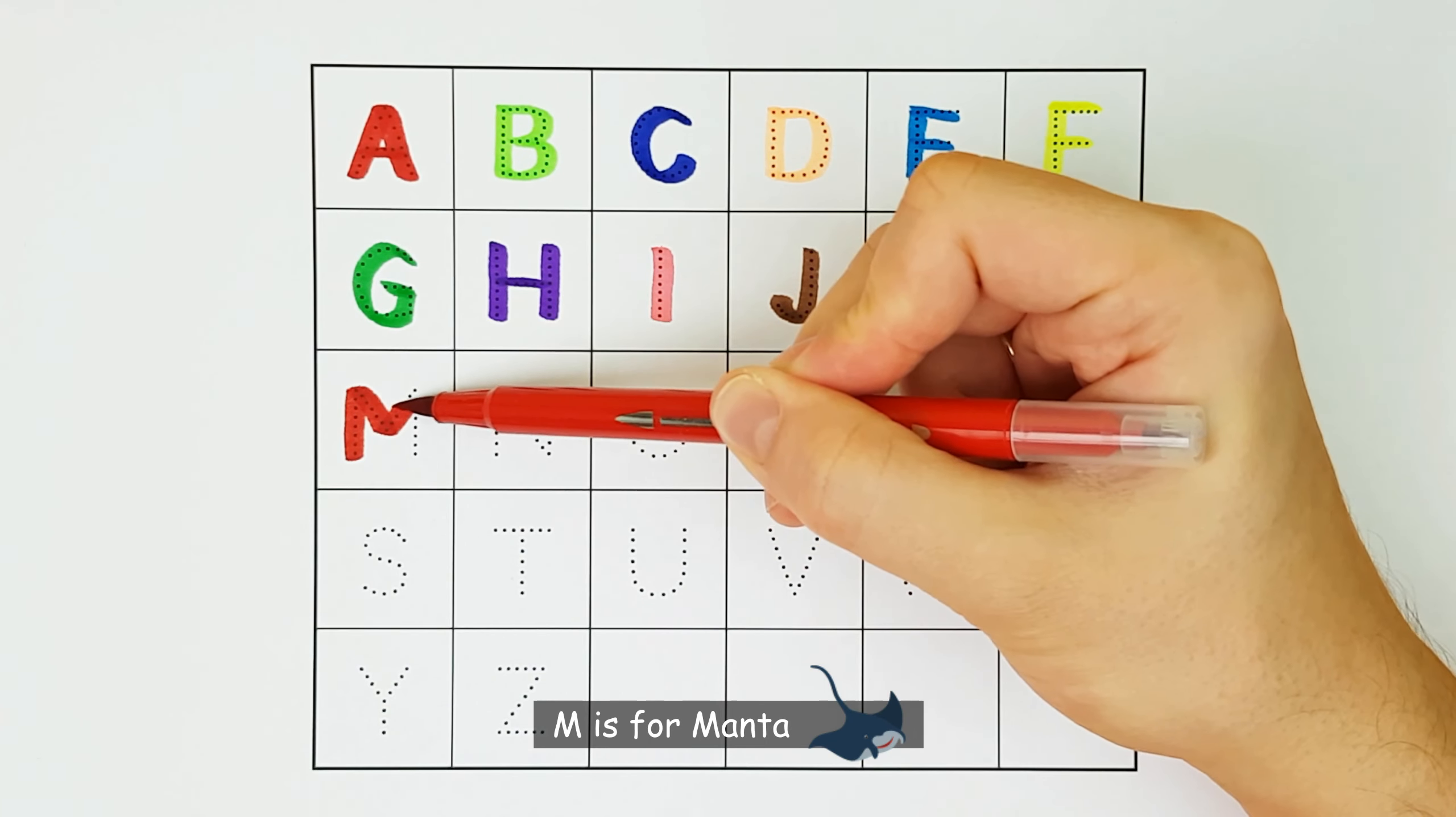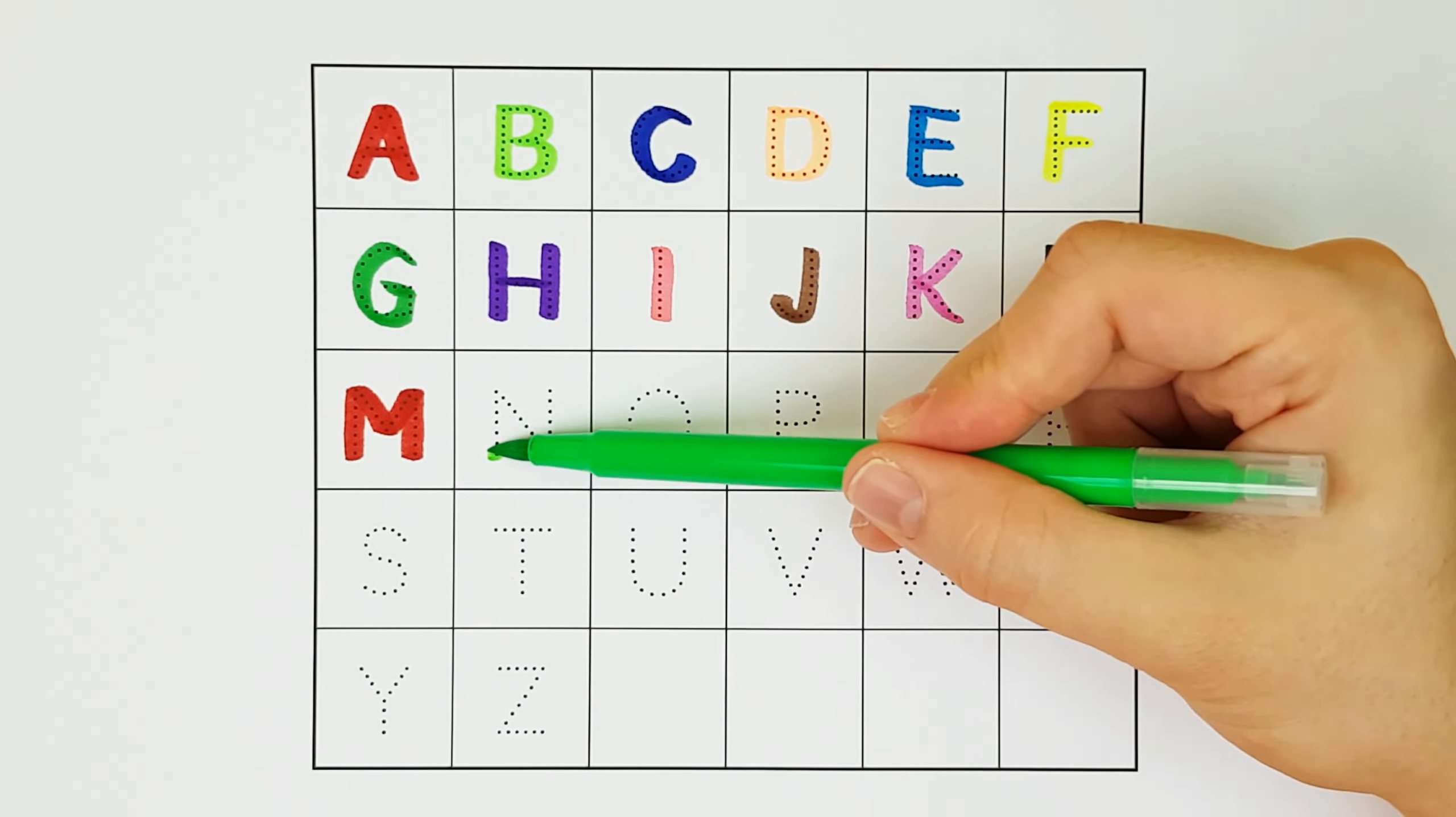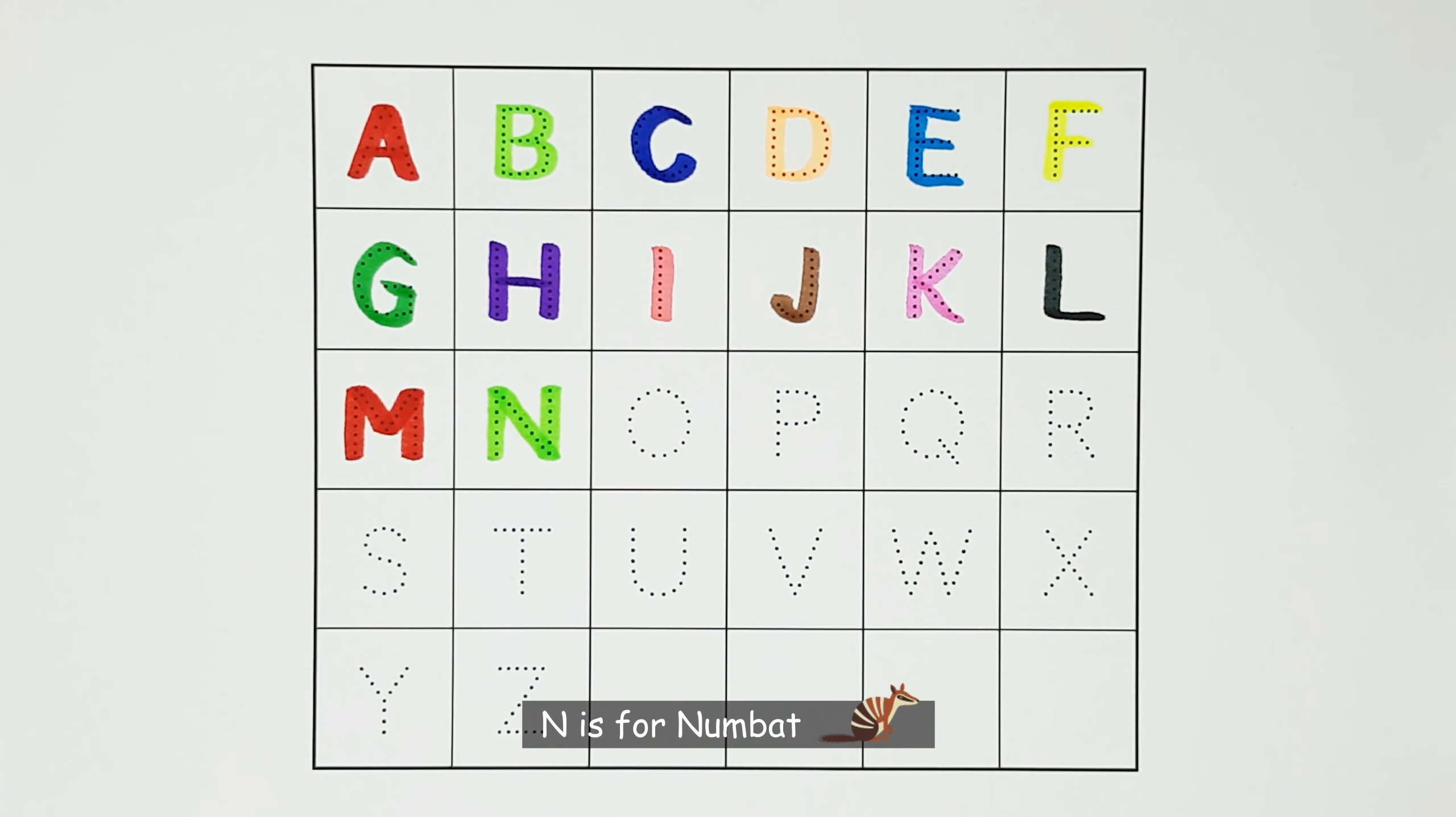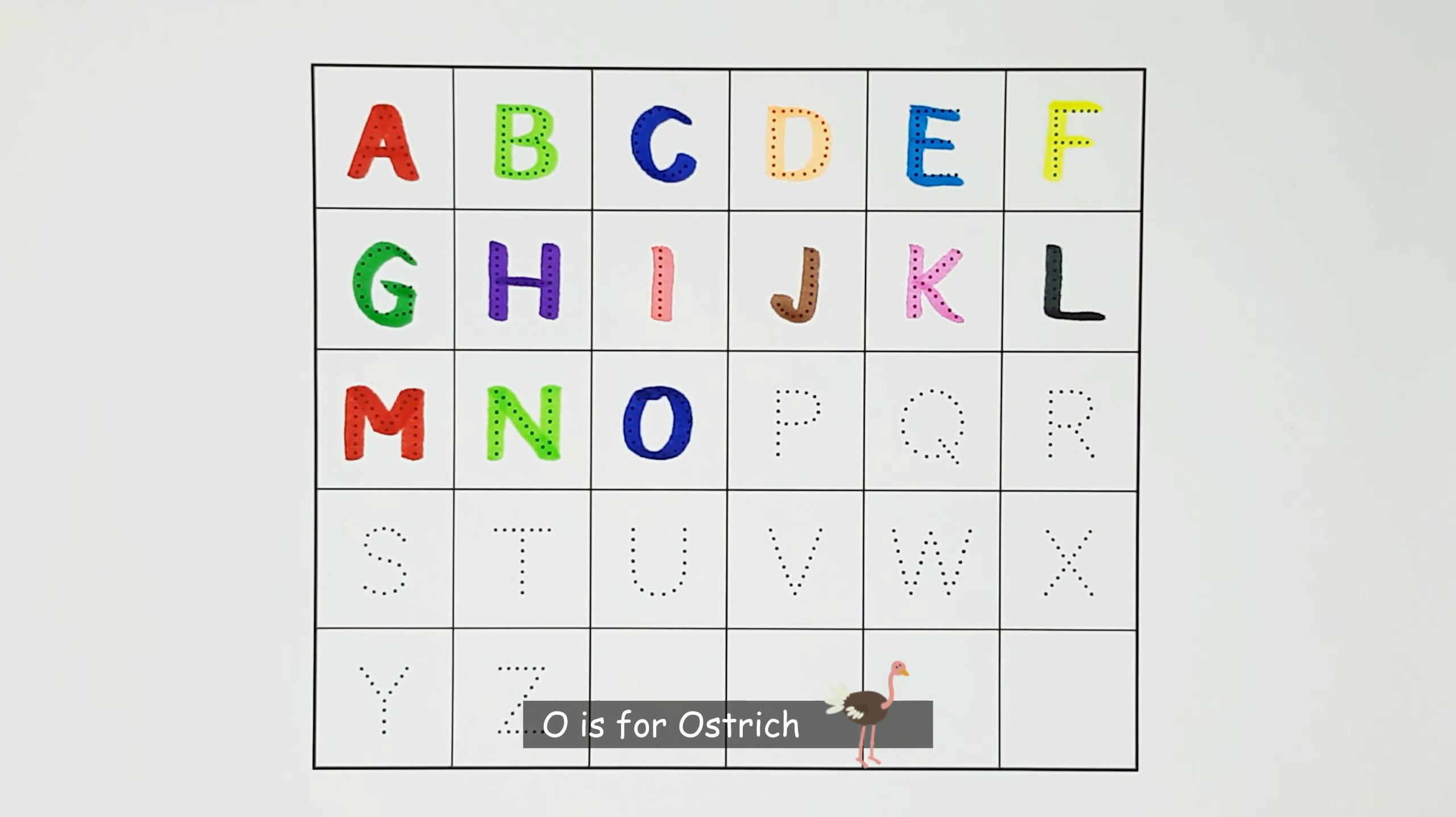M. M is for manta. M. N. N is for numbat. N. O. O is for ostrich. O.